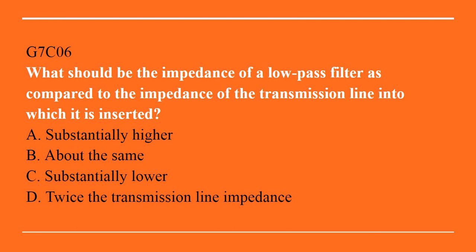G7C06: What should the impedance be of a low-pass filter as compared to the impedance of the transmission line in which it is inserted? A. Substantially higher. B. About the same. C. Substantially lower. D. Twice the transmission line impedance. Answer is B. About the same.